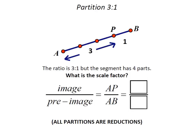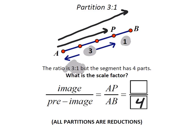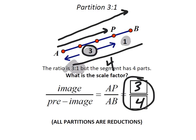Let's convert another one to a scale factor. This ratio is 3 to 1, which means first comes the 3, then comes the 1. What would be the scale factor? The original point B is 4 away, so the pre-image value was 4, and the image is 3 away. So this would be 3 fourths — 3 out of the 4 parts. That is the scale factor, while 3 to 1 is the actual partitioning ratio.